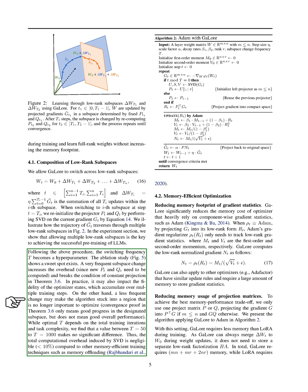The frequency of subspace changes, denoted by T, is a hyperparameter that impacts algorithm performance. Empirical studies suggest that a value between T=50 to T=1000 is effective, with negligible computational overhead from SVD compared to other memory-efficient techniques.